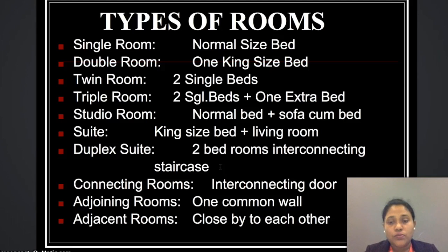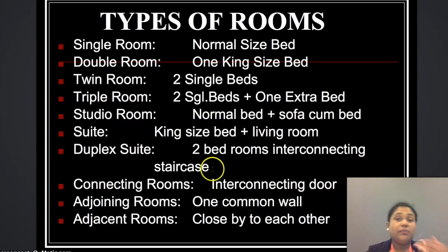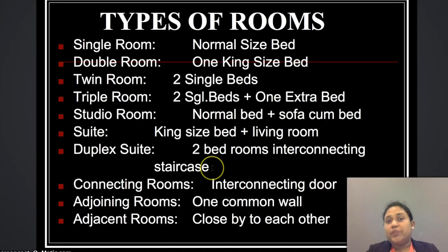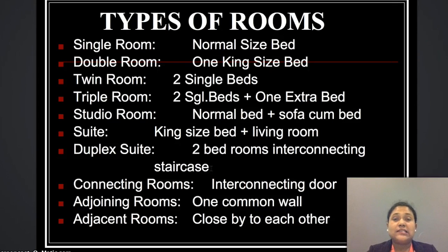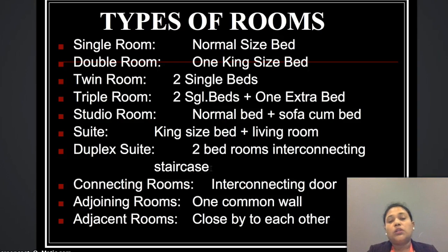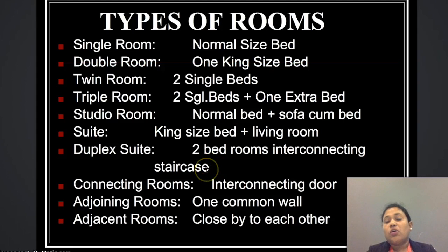Connecting rooms have an interconnecting door between two rooms, helping a larger group or family live together without needing to access the main entrance to enter the other room. Adjoining rooms share one common wall or are just close to each other, next to each other. Adjacent rooms are close to or opposite each other.